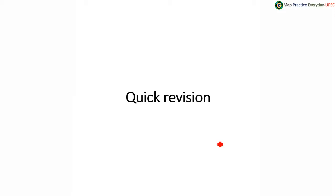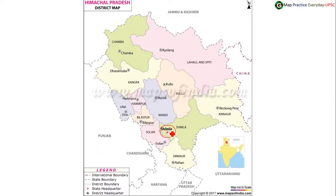Yesterday, Himachal Pradesh — Shimla was discussed. Shimla is here in the southernmost part of Himachal Pradesh. Himachal Pradesh shares its boundary with Jammu Kashmir, Punjab, Haryana, Uttar Pradesh, Uttarakhand and China — an international boundary with China.